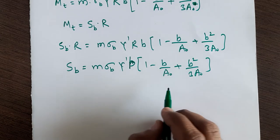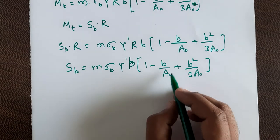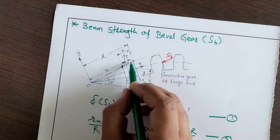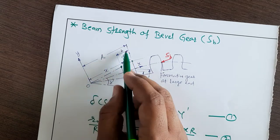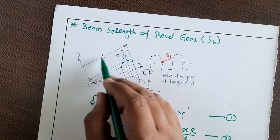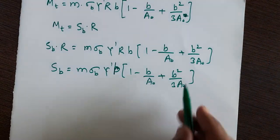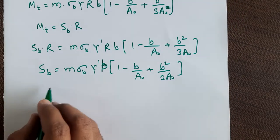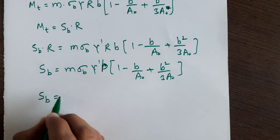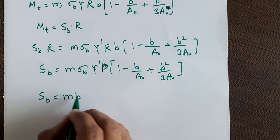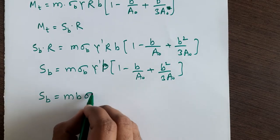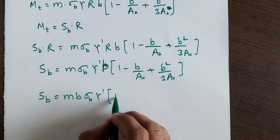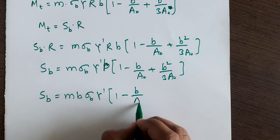The cone distance is a₀ and face width is limited to a₀/3. Comparing face width b with a₀, since b = a₀/3, the third term b²/(3a₀) becomes very small and can be neglected. Neglecting the third term, Sb becomes: m·b·σb·y'·(1 - b/a₀).